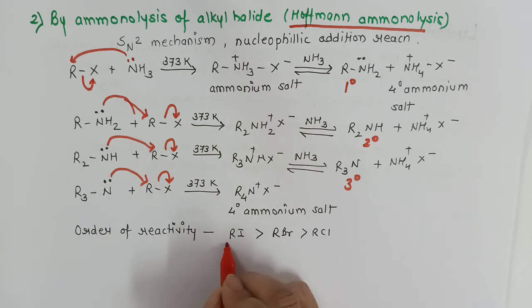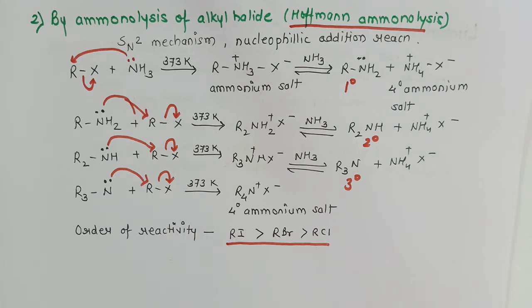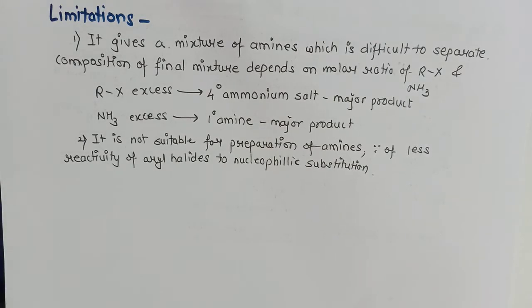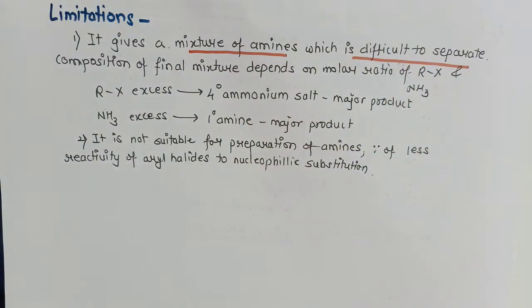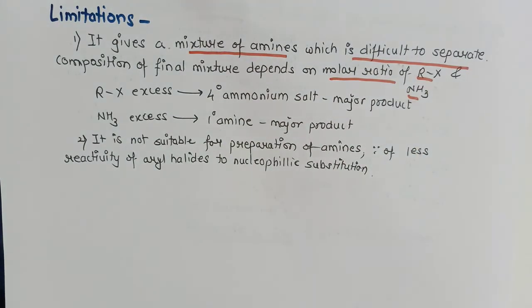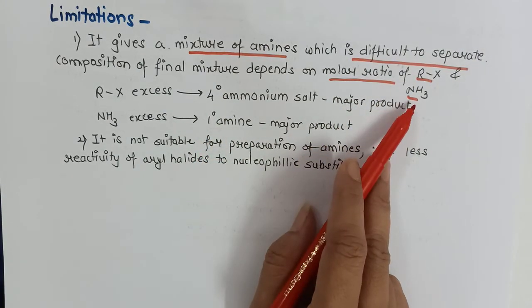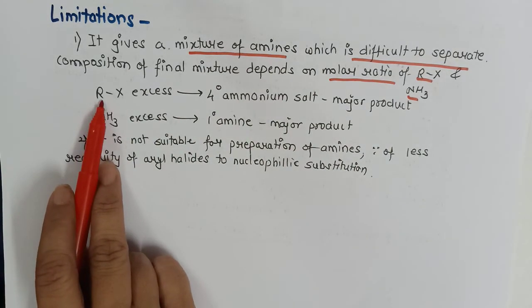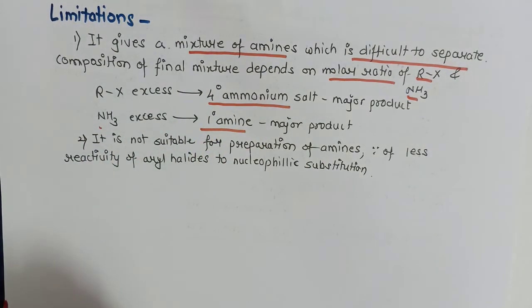The order of reactivity: iodoalkane reacts faster than bromoalkane, which is faster than chloroalkane, because the larger size of iodine makes it a better leaving group. This is one limitation — the reaction gives a mixture of amines that is difficult to separate. However, the reaction can be controlled by changing the molar ratio of alkyl halide to ammonia. Alkyl halide in excess gives quaternary ammonium salt as the major product; ammonia in excess gives 1° amine as the major product.